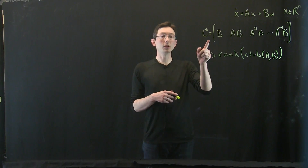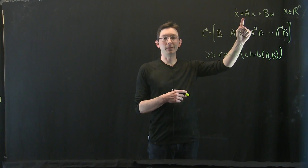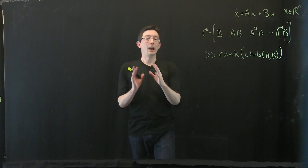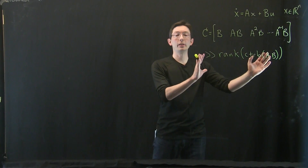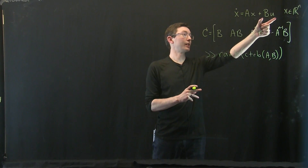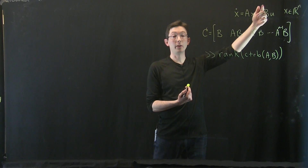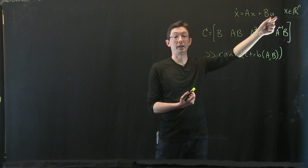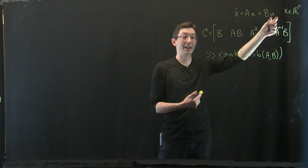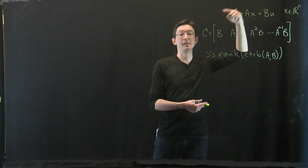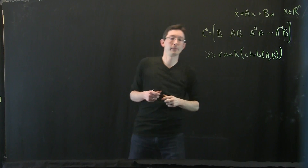We're talking about the controllability of the system ẋ = Ax + Bu. The reason we want to know if the system is controllable is because we want to know if it's possible to design a control law u = Kx to make the system have desired stability properties or performance.